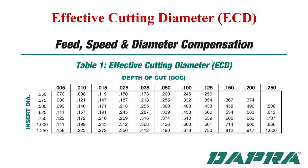Here's a reference chart available on the resources page of DAPRA's website or from page 112 of their current printed catalog. If tip cutting, match the cutter diameter on the left of the chart with the depth of cut on the top, and the intersecting number is your ECD. For example, take the three-quarter diameter on the left, match it with 15 thousandths depth of cut at the top, and you'll see the ECD is 210 thousandths — that's the diameter you'd use when calculating RPM. If surfacing using much of the ball diameter, multiply your ball nose diameter times 0.7 to get your ECD. A link to this chart is provided in the comments section below.